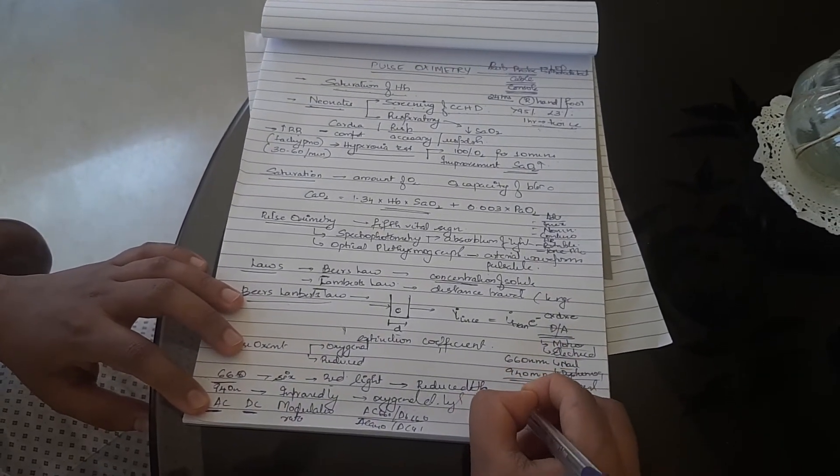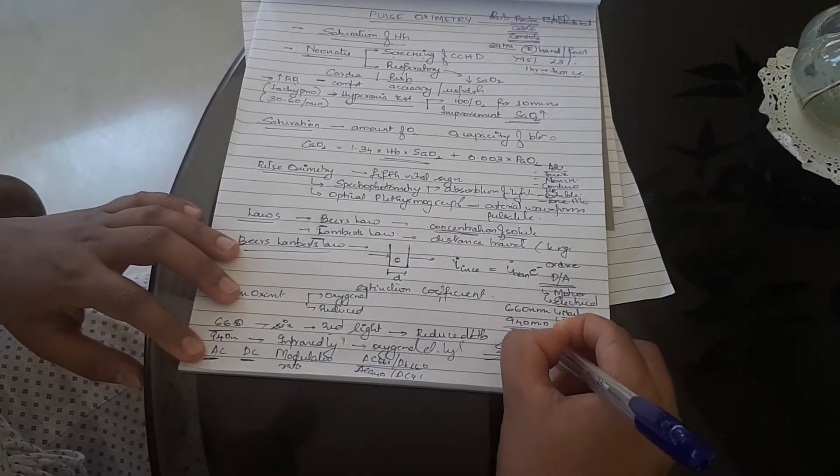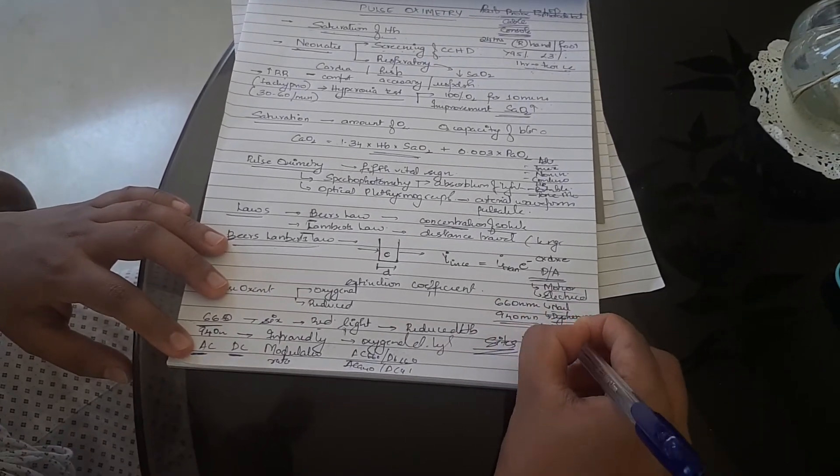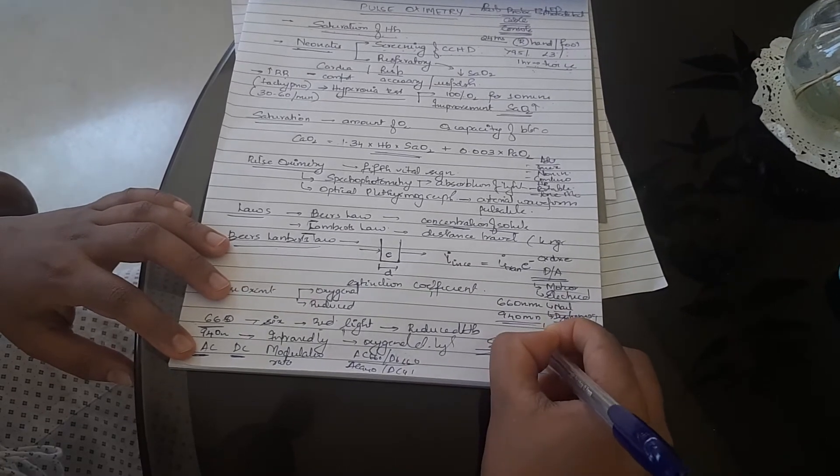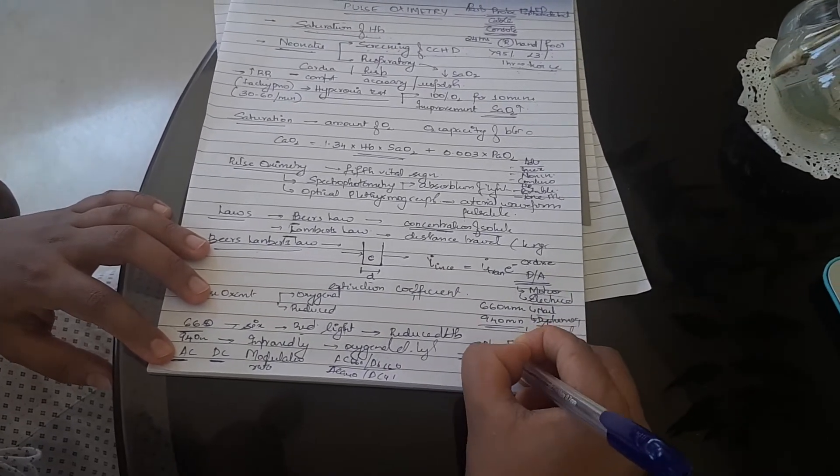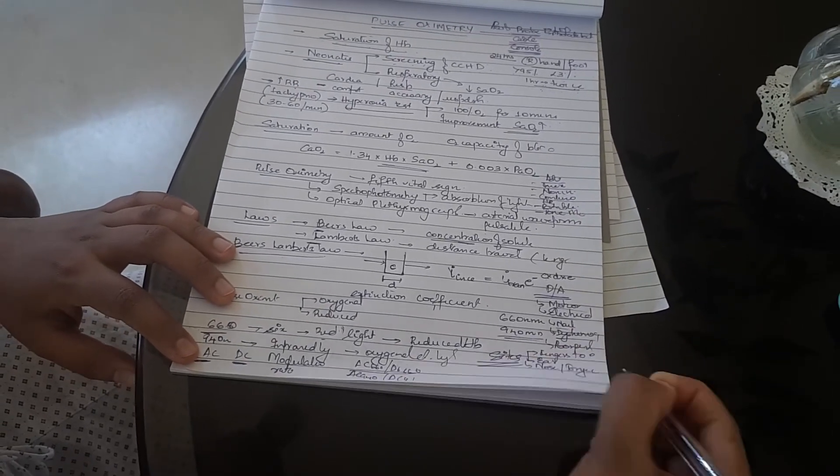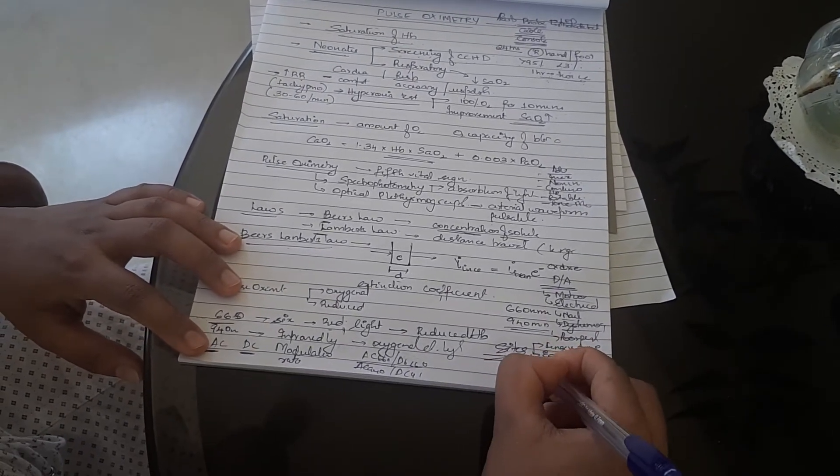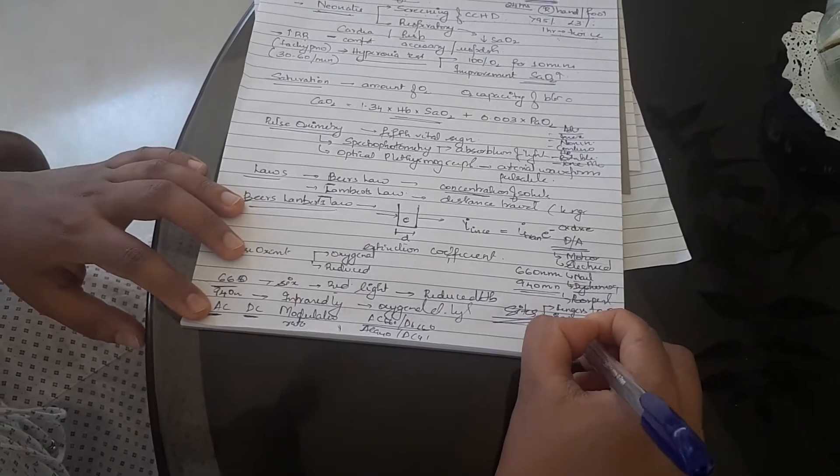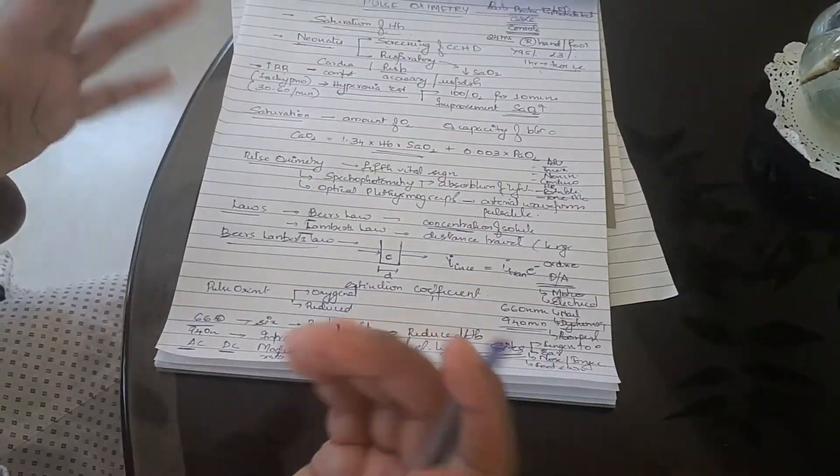Next, sites where you can apply this. Most commonly in adults we use fingers and toes. You can even use the ear. For pediatric population, we can use the nose, the tongue. And we use the foot and wrist for neonates because their fingers are so small.